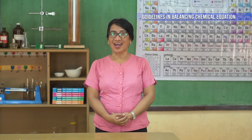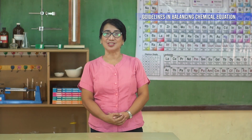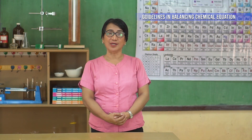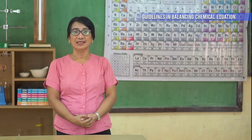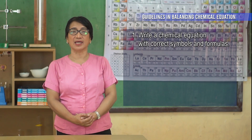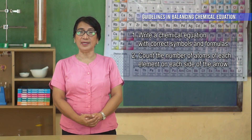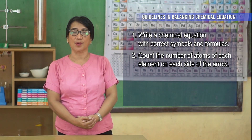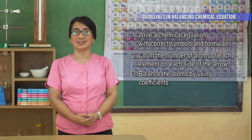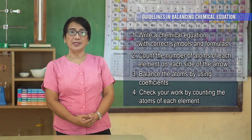When you are already used to it, the rules to balance a chemical equation are simple. Step one: write a chemical equation with correct symbols and formulas. Step two: count the number of atoms of each element on each side of the arrow. Step three: balance the atoms by using coefficients. Step four: check your work by counting the atoms of each element.